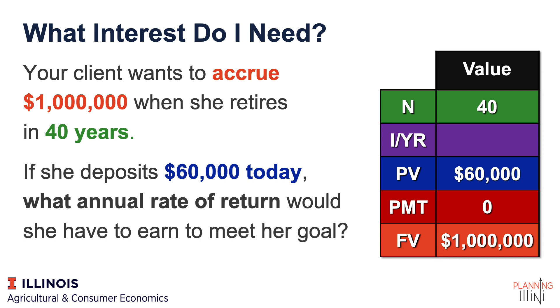That $60,000 might be money she has in checking, savings, an IRA account, or a brokerage account. But she's got $60,000 today, and we're going to see what it would take to get to that million.